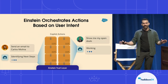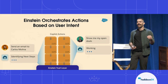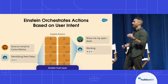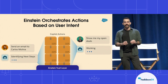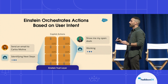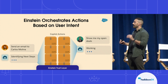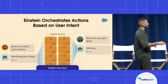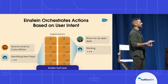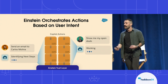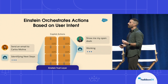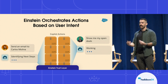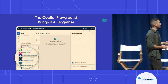In a nutshell, every time you or your users ask a question in Einstein Copilot, Einstein quickly identifies the intent. Based on that intent, it sorts through all of the actions available in that Copilot and orchestrates the actions that Einstein needs to fulfill that request.